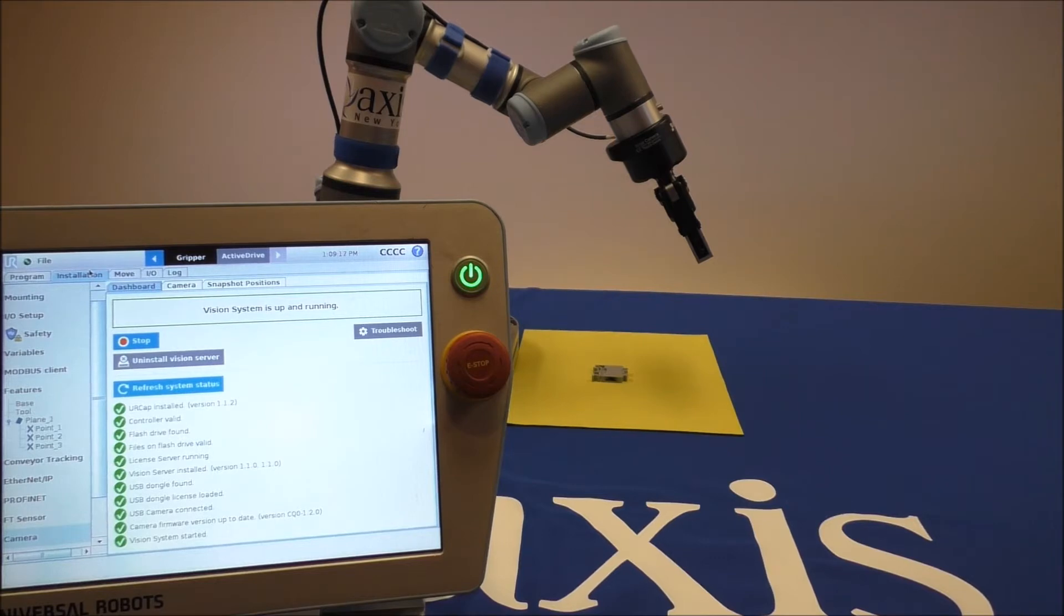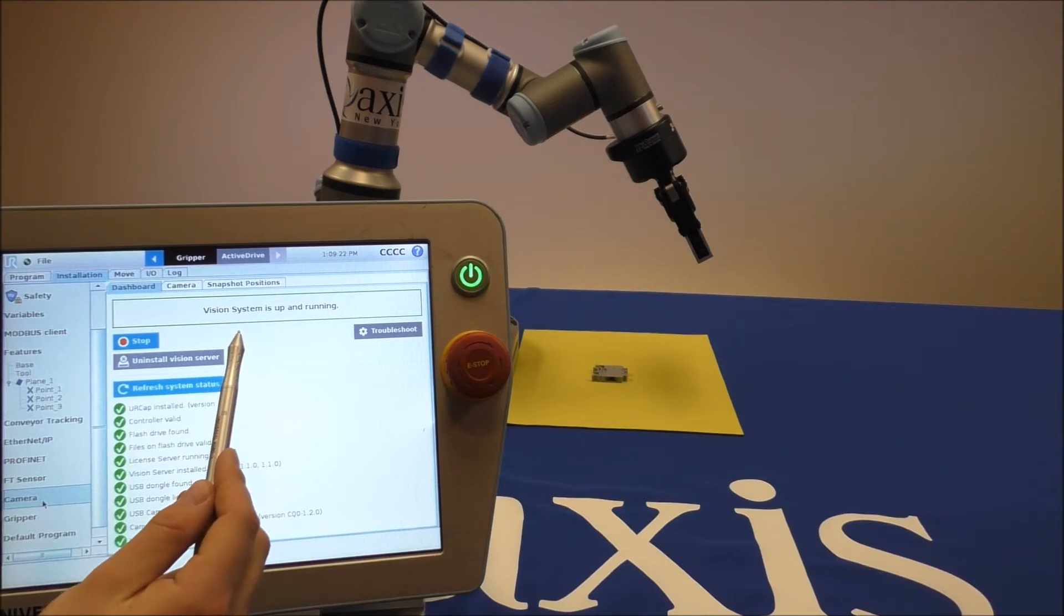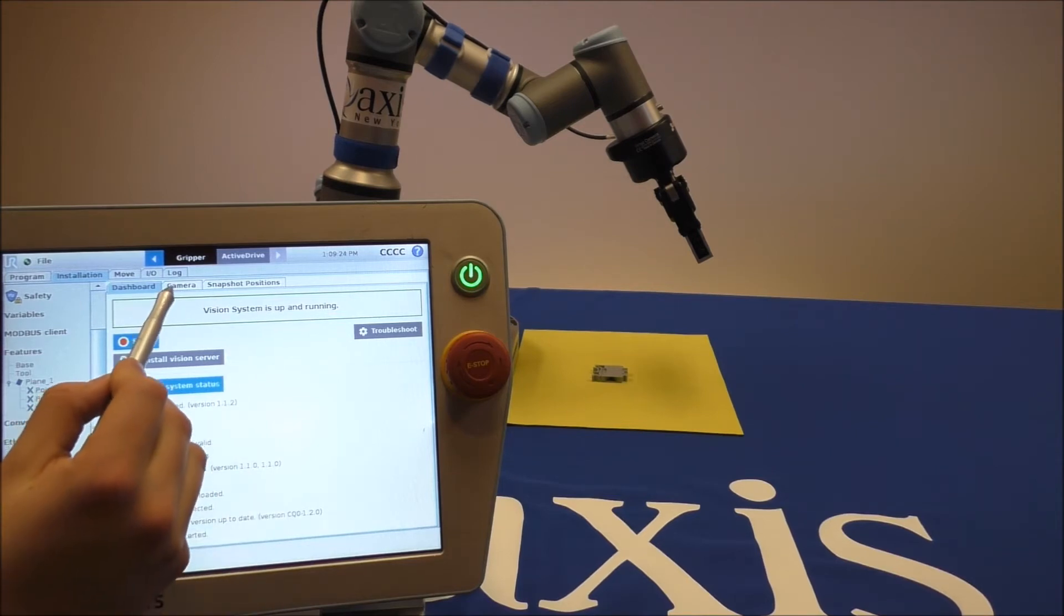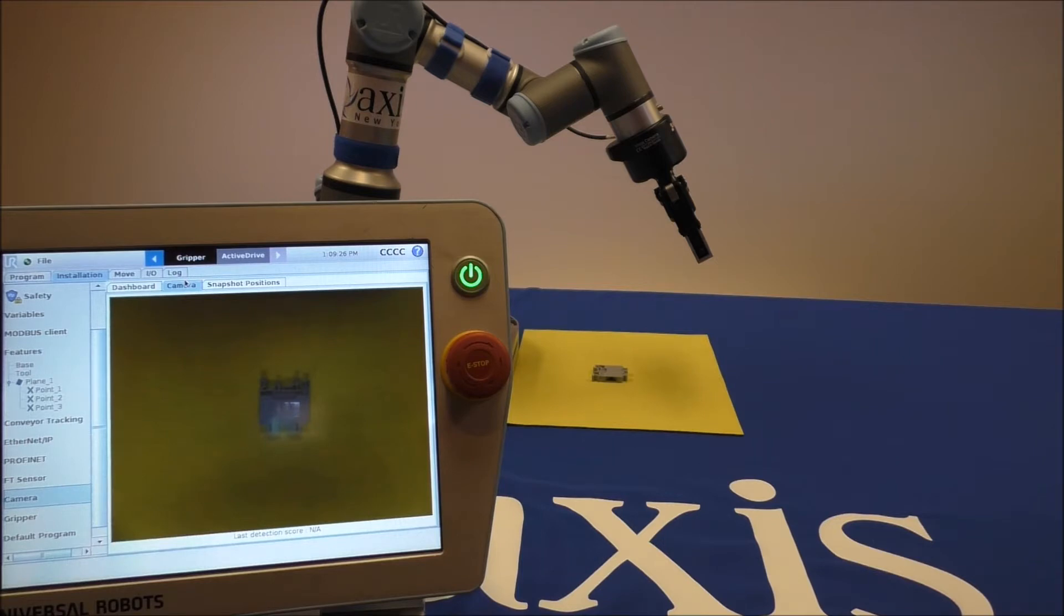Looking at the installation tab and scrolling down to camera, we can see that our vision system is up and running with no errors. If we click on the camera tab, we can see a live image of our part.